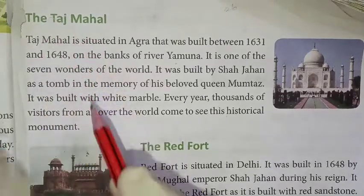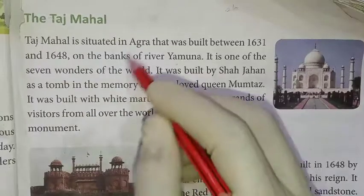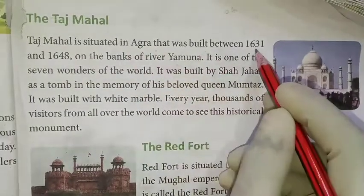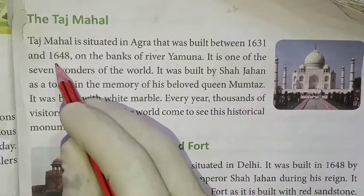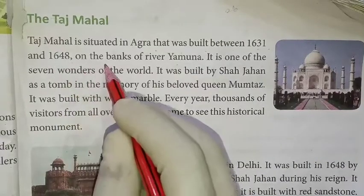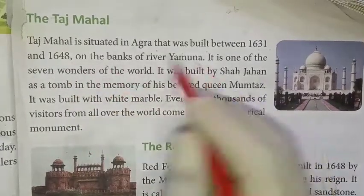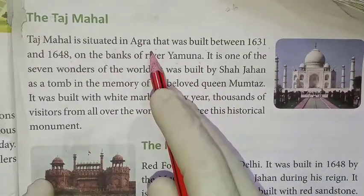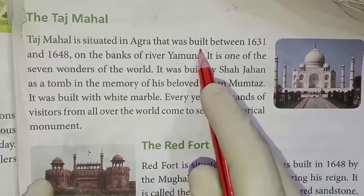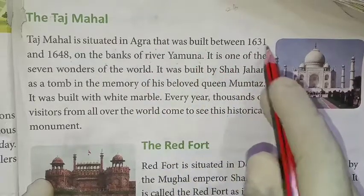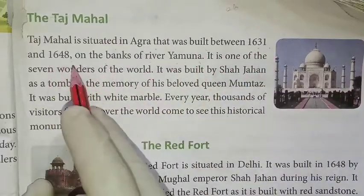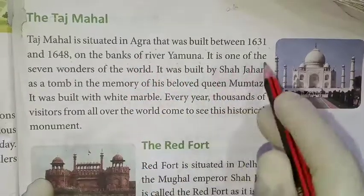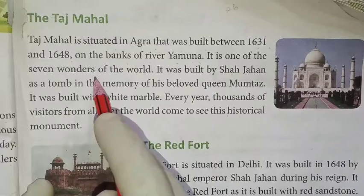Next, the Taj Mahal. The Taj Mahal is situated in Agra. It was built between 1631 and 1648 on the bank of river Yamuna. It is one of the seven wonders of the world.